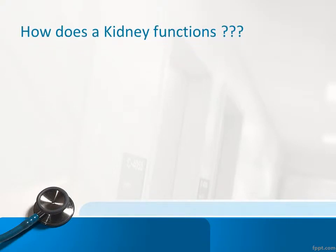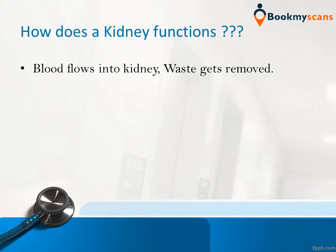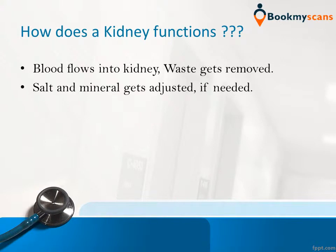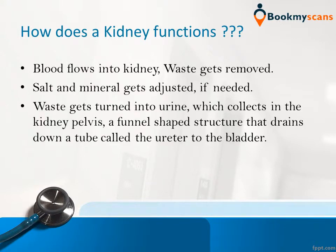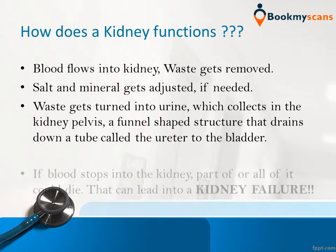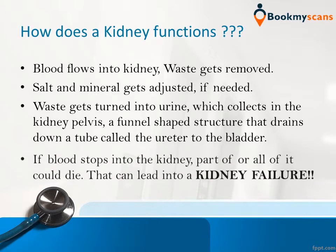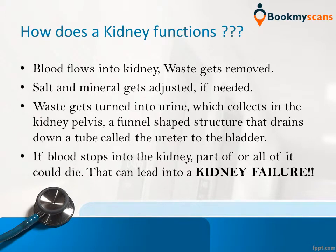How does a kidney function? Blood flows into the kidney and waste gets removed. Salt and minerals get adjusted if needed. Waste gets turned into urine, which collects in the kidney pelvis — a funnel-shaped structure that drains down a tube called the ureter to the bladder. If blood stops flowing into the kidney, part or all of it could die, and that can lead to kidney failure.